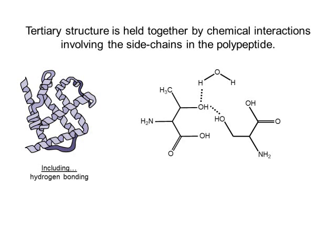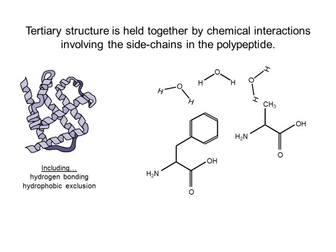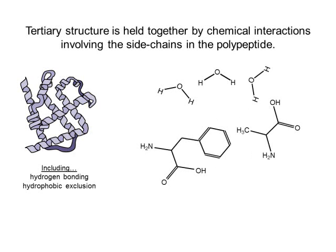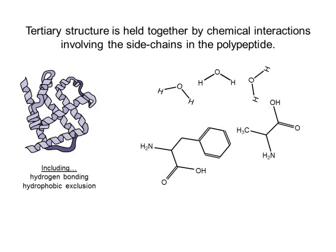Besides hydrogen bonding, we can also see what's called hydrophobic exclusion. Here we see phenylalanine and alanine — two hydrophobic or nonpolar amino acids that are unable to hydrogen bond with water in their environment. These amino acid side chains tend to cluster together as they move away from the water in the surrounding environment. This movement of hydrophobic or nonpolar side chains together causes bends and twists in the overall polypeptide.